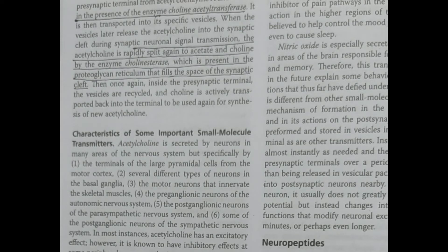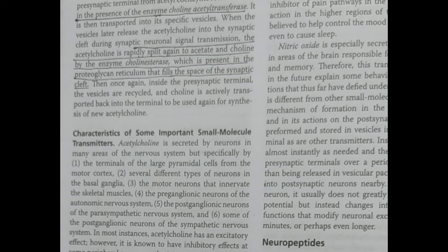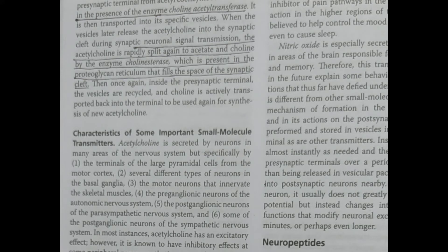The synaptic cleft has important functions, such as containing cholinesterase, which separates the neurotransmitter. In the recycling process, once acetylcholine has done its function, it is split into acetate and choline — but only choline is actively transported back to the terminal. Acetate is not recycled back. That is a very important term to memorize.